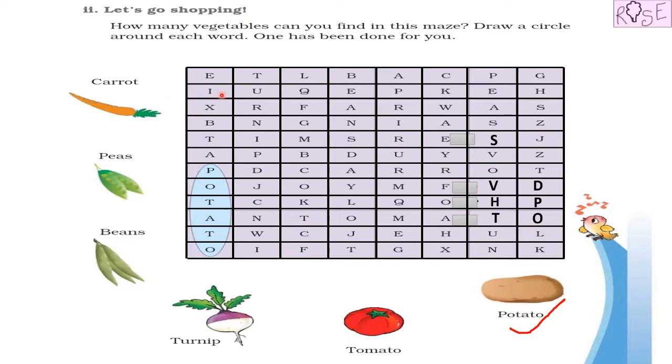So the first letter is C. So we can find, where is C? I can see a C here, but there is no carrot here. We cannot make carrot from here also. We cannot make carrot from here also. So now we will find another C. I can see a C here too. So yes, see, this is the word carrot.